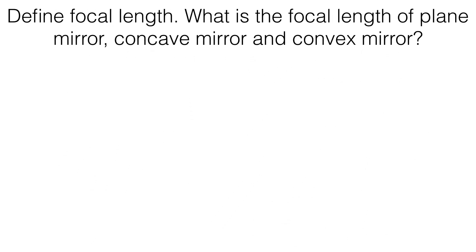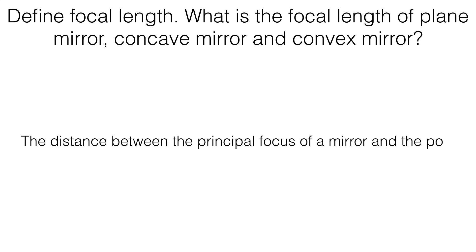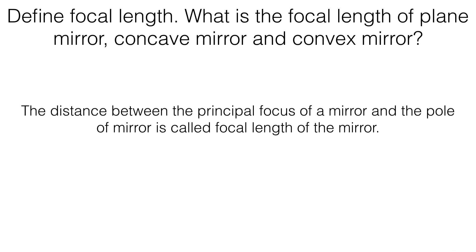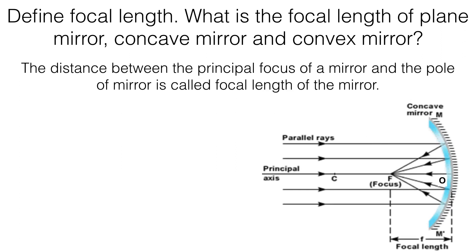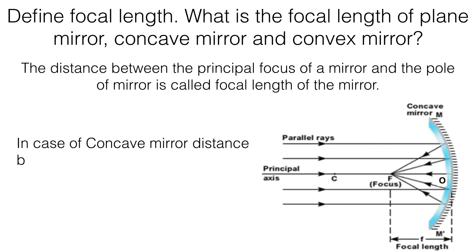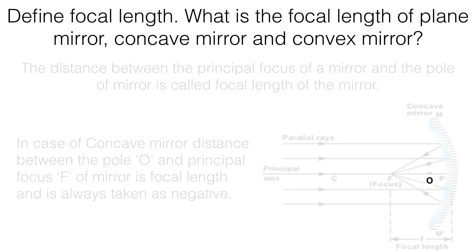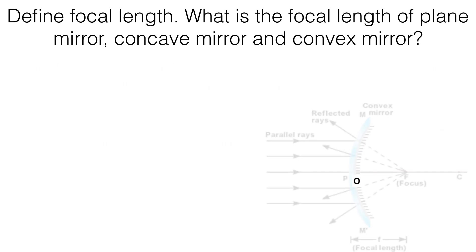The distance between the principal focus of a mirror and the pole of the mirror is called the focal length of the mirror. In the diagram below, O is the pole of the mirror and F is the principal focus of the mirror. So the distance between O and F is the focal length of the mirror.